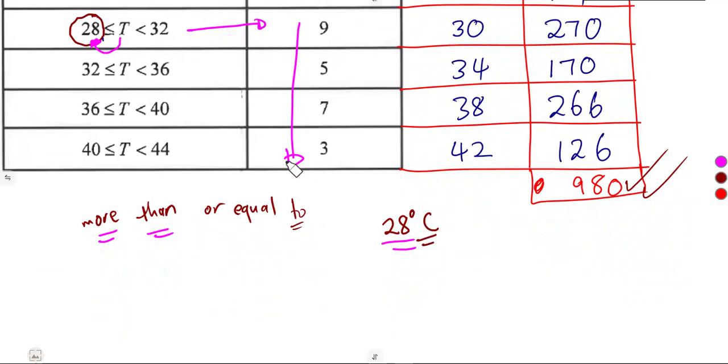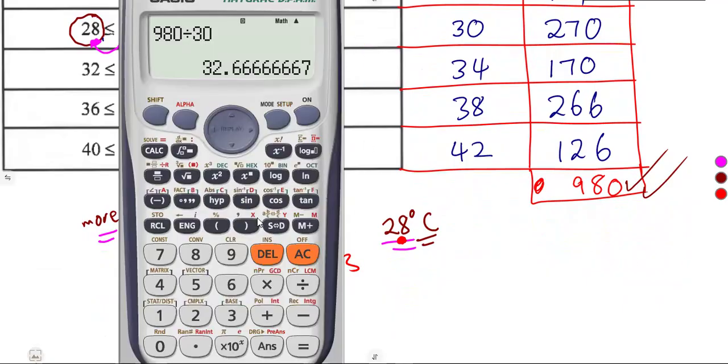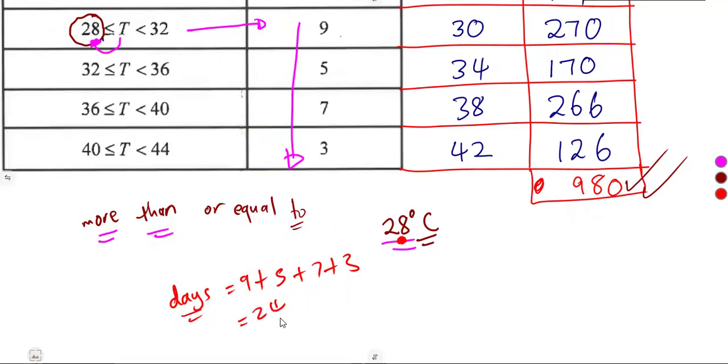Those are the ones that are corresponding to values which are more than 28 degrees Celsius. How many days? First, let's talk about the days which are having the temperature that is more than or equal to 28. So we're going to add 9 plus 5 plus 7 plus 3. We add the days that we are given. That's going to give us a sum of 24. That's what we are referring to, 24 days.